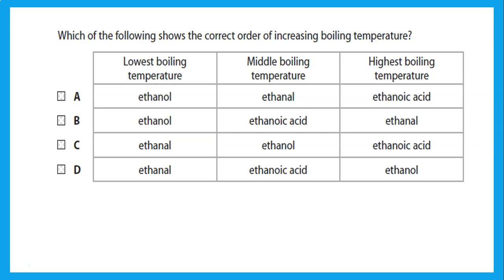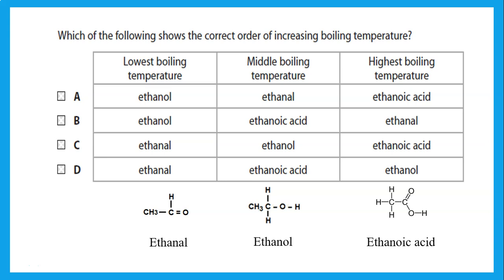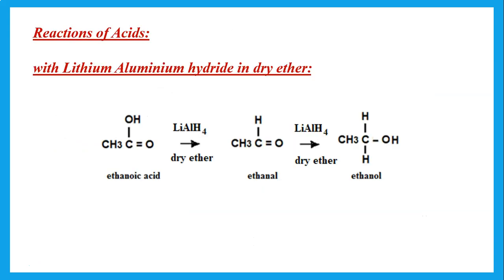Hydrogen bonding with water allows acids to be miscible with water. Which of the following shows the correct order of increasing boiling temperatures? If we have ethanol (aldehyde), ethanol (alcohol), and ethanoic acid, they all have the same number of carbons. The acid has the highest boiling point, the aldehyde has the lowest, and ethanol is in between since it can also form hydrogen bonding between molecules.